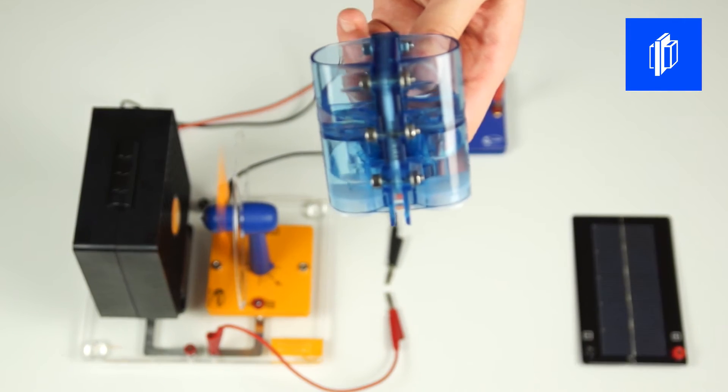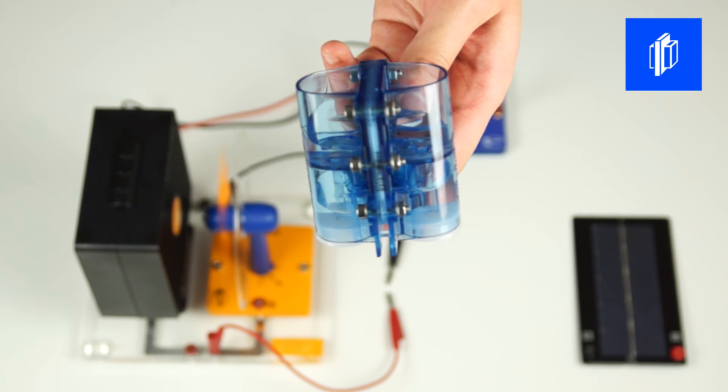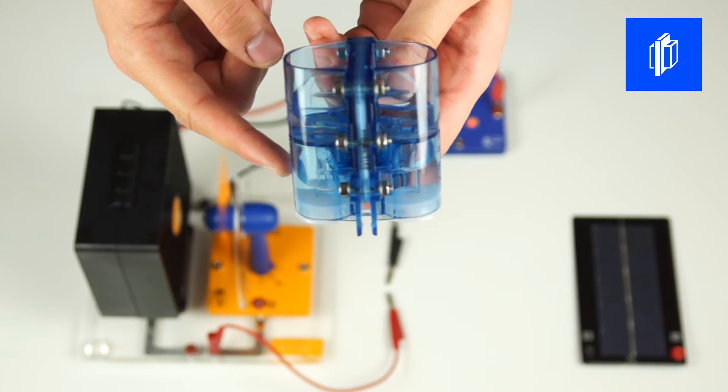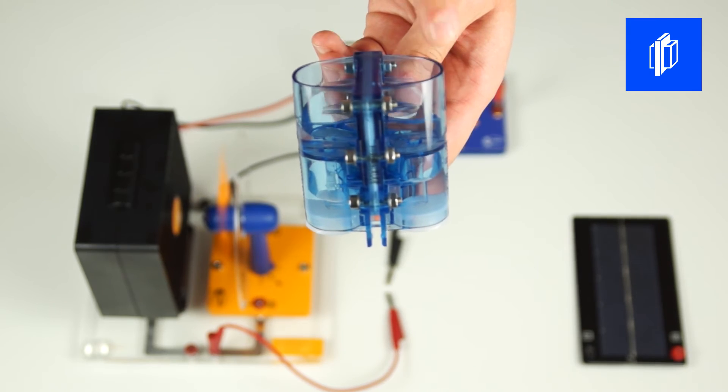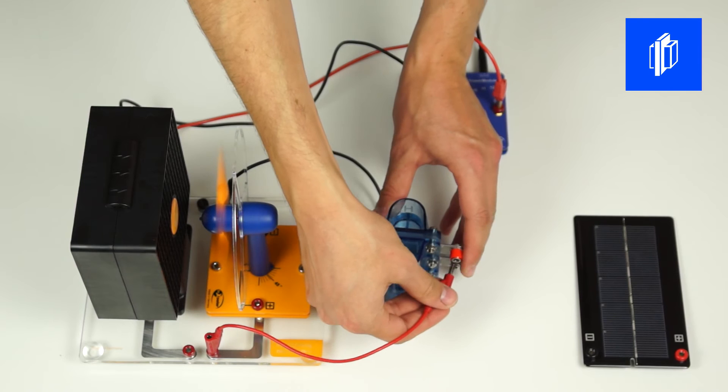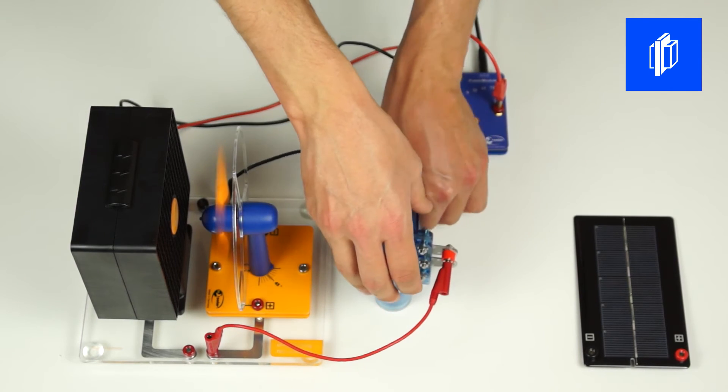A reversible fuel cell is capable of storing electrical energy chemically. By the process of electrolysis, water is split into hydrogen and oxygen that are stored. To power this process, wind power, photovoltaics or a power module can be used.